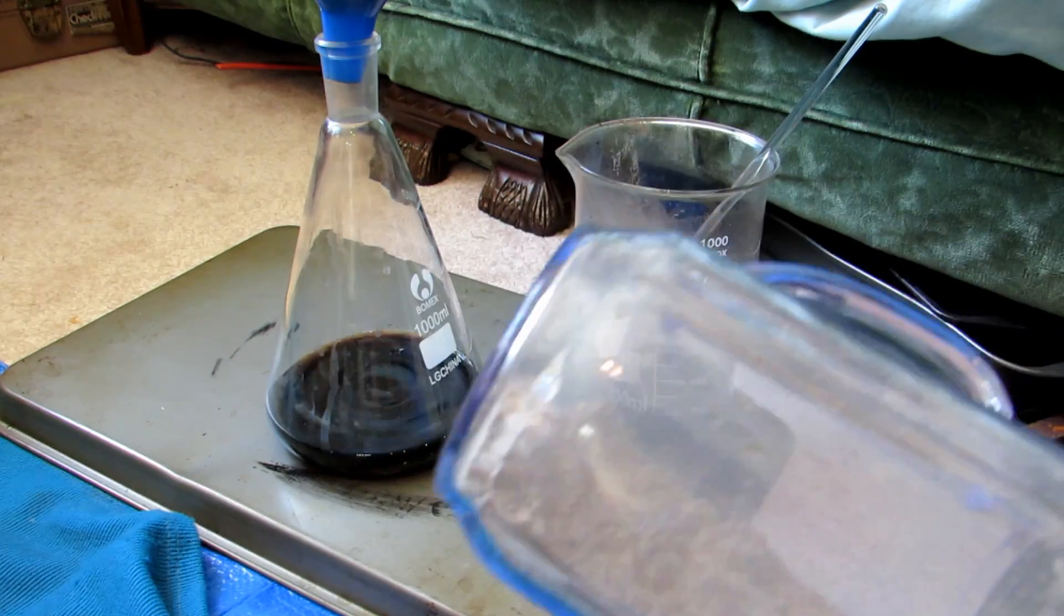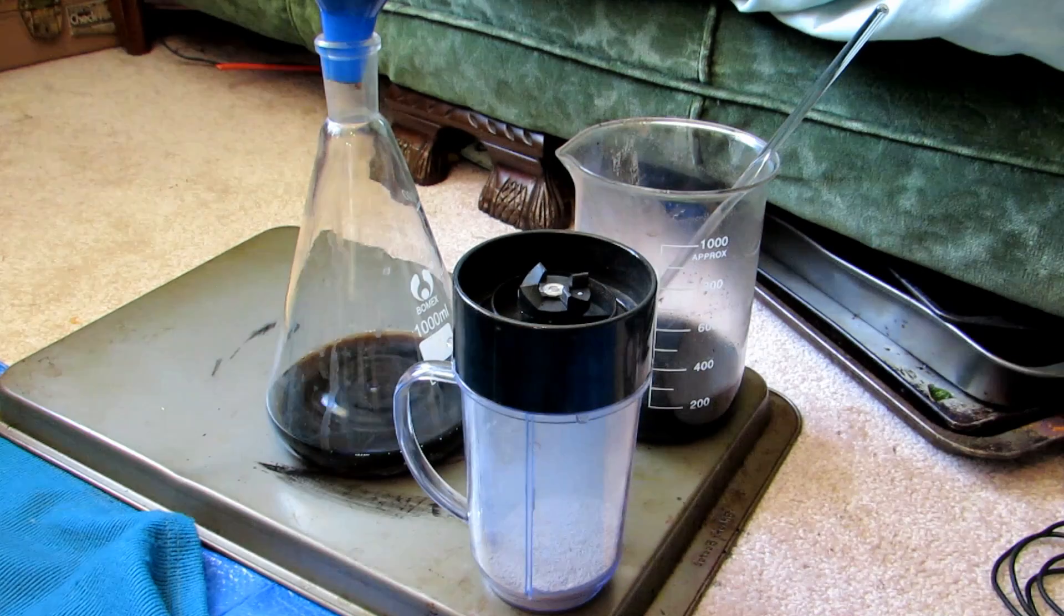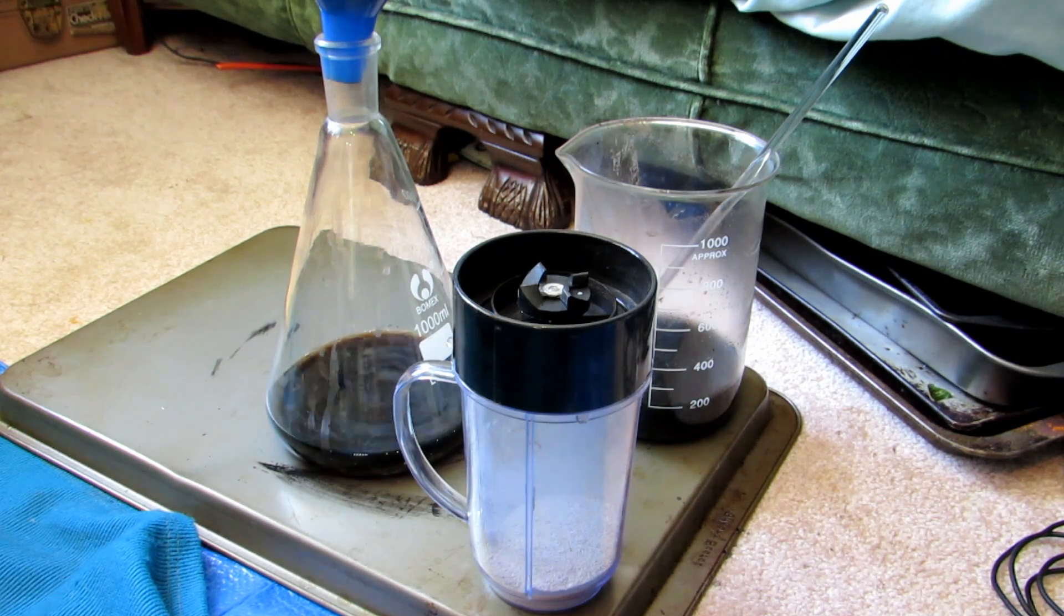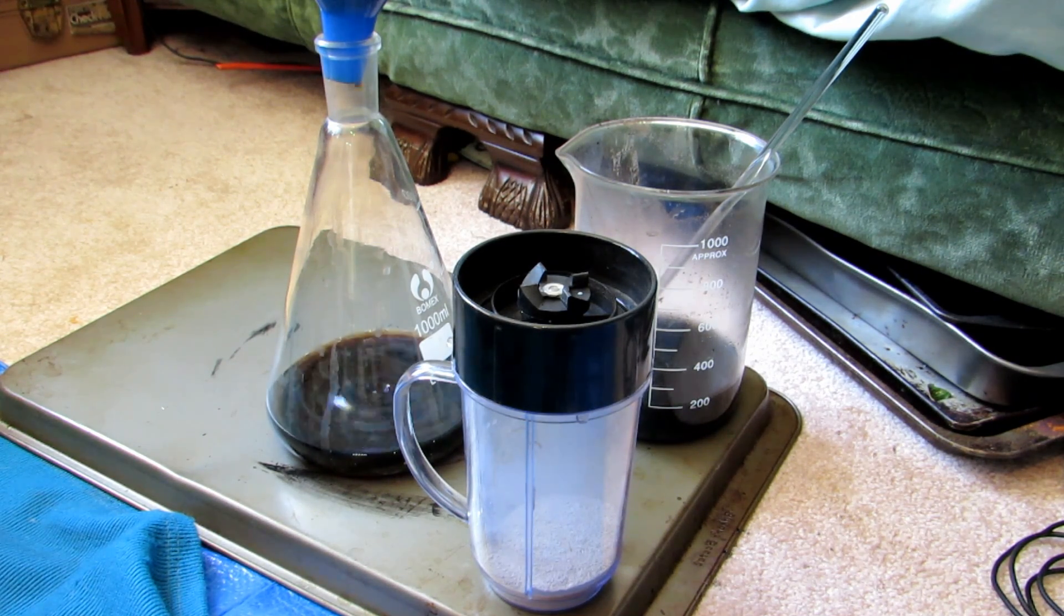And potassium carbonate just so happens to be insoluble in ethanol, which is even better. Now of course, because this is off-white, there still is impurities, so we're not going to end up with pure potassium carbonate. However, the potassium hydroxide will be very pure, because all of our potassium nitrate decomposed when we heated this up. But it's looking good so far.